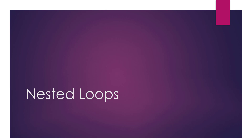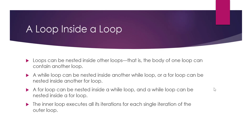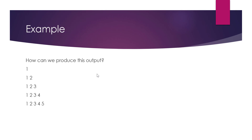In this video we will look at nested loops. The idea of a nested loop is basically just having a loop inside another loop. You can have a for loop inside another for loop, a while loop inside another while loop, or you can mix them. When you have multiple loops inside each other, the inner loop will execute all its iterations before moving to the next iteration of the outer loop.